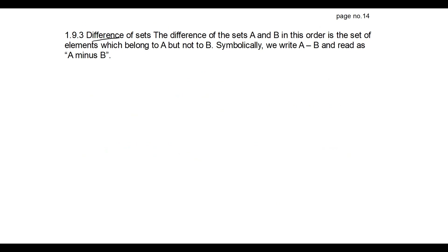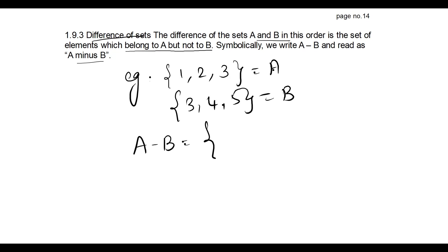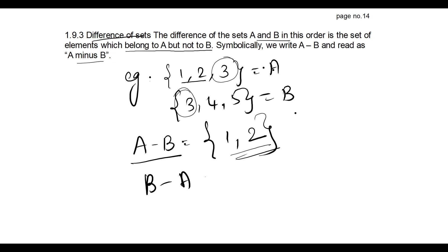1.9.3 is difference of sets. A difference B means you check the elements of A against the elements of B and take those elements in A that are not present in B. For example, let A = {1, 2, 3} and B = {3, 4, 5}. Then A difference B = {1, 2}, since 1 and 2 are not present in B. Similarly, B difference A = {4, 5}, since 4 and 5 are not present in A.